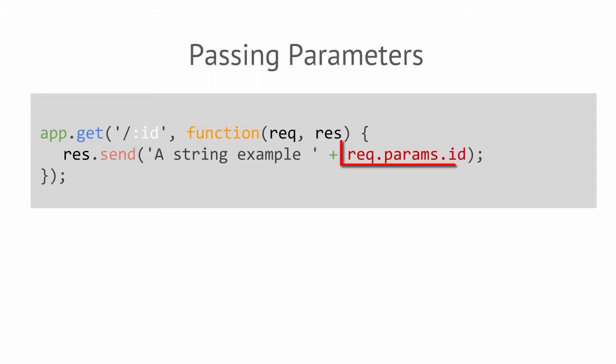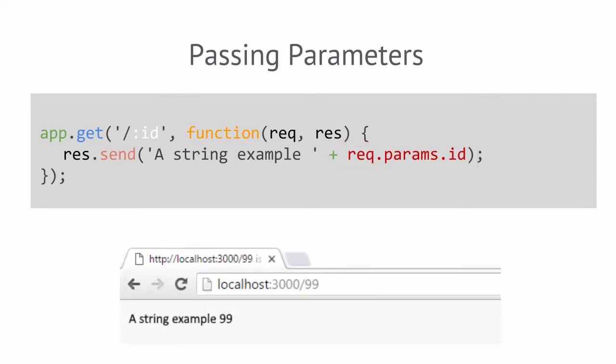We're able to use the params method of the request object to retrieve available parameters from an HTTP request. In the example below, we pass the 99 parameter from the URL and use it to display in a string message. We're using the send method to display a string and attaching it to the parameter's request object.